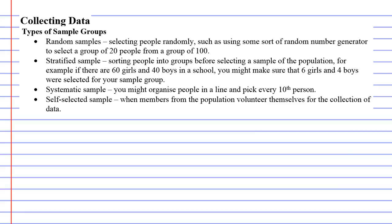Types of sample groups. There's lots of ways you can select a sample of people and we've got four methods here that you can use. The whole point of it is to try and avoid getting biased data, because whenever you collect data from a sample of the population, you risk getting biased data.